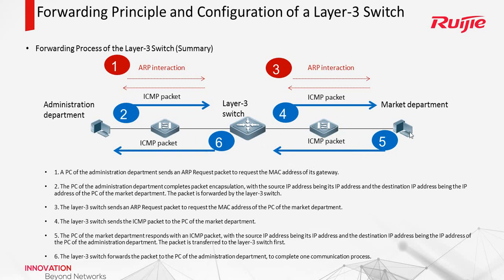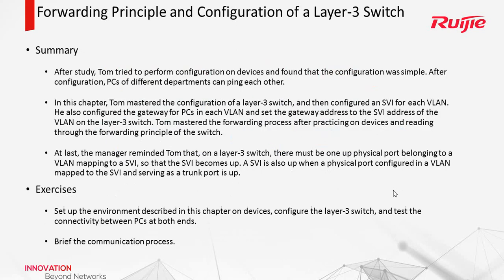When a PC receives the ARP request packet, it also learns the gateway's MAC address. Now let us have a summary. Today we learned the forwarding principle and the configuration of a layer 3 switch. We know the layer 3 switch can help us forward packets between different VLANs. We also learned the interface VLAN — its name is SVI, and it acts like the gateway of the VLAN. There are also several exercises left for you. Please read and answer them. Thank you for watching this video. See you next time.